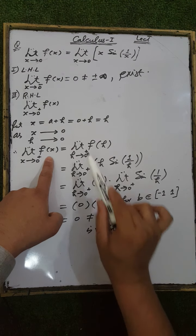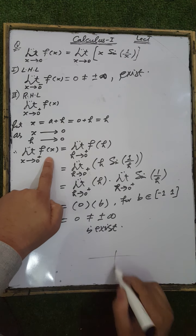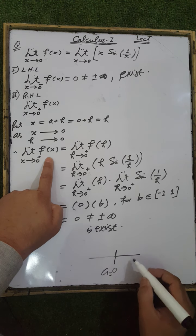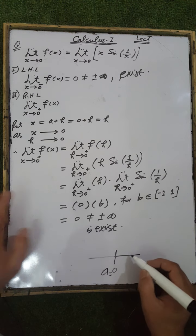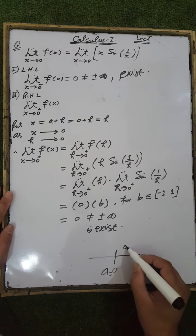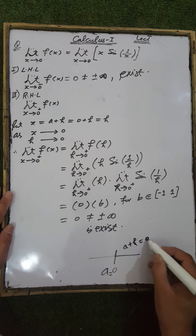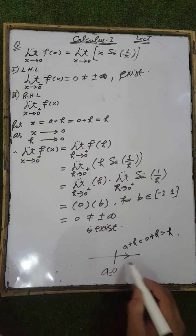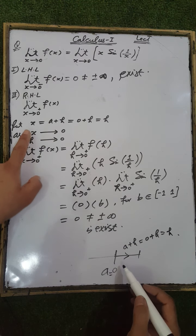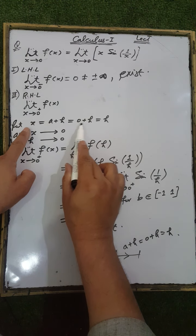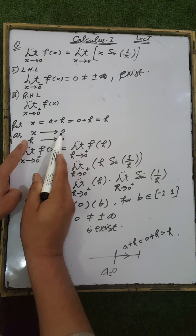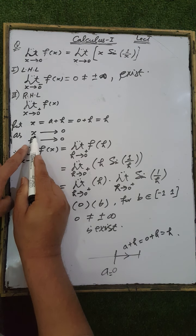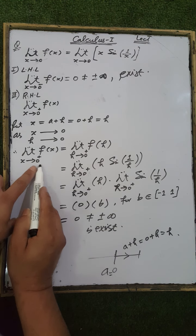To calculate the right-hand limit, bound the function f(x) to the right side of the neighborhood of a point 0. The elements of the right side of the neighborhood of a = 0 are in the form a plus h, so 0 plus h = h. Put x = a plus h = h; as x tends to 0, replace x by h and h tends to 0.